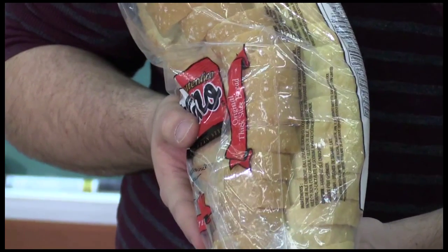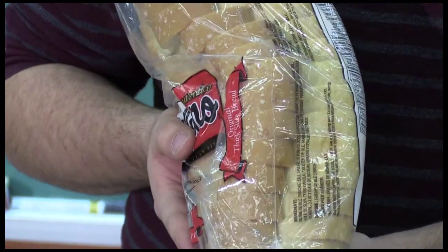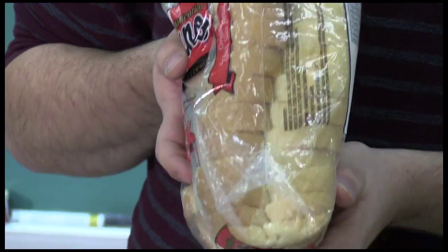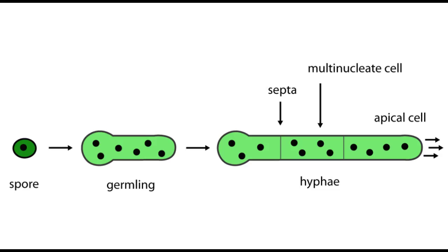There are two growth forms of fungi. Unicellular, which is yeast, which makes this bread that I bought, or multicellular filamentous forms known as mycelia.